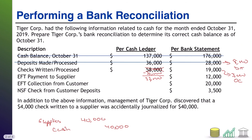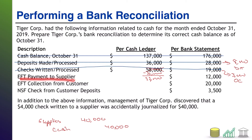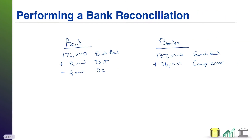Next, an EFT payment to a supplier. EFTs are when the bank transfers money on our behalf. The bank sent $12,000 out of our account without our prior knowledge. We didn't know that until we got the bank statement and are doing this reconciliation. So from the company perspective, we now have to record minus $12,000 for the EFT payment to our cash ledger, because the company hadn't recorded this yet.